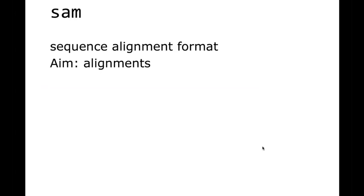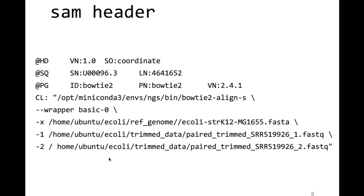The SAM format stands for Sequence Alignment/Map format, and its purpose is to store alignments. Like many other files in bioinformatics, it is a regular text file that starts with a header, followed by a tab-delimited section. The header contains quite a bit of information — header lines always start with an at sign. Different types of information are stored with specific tags.